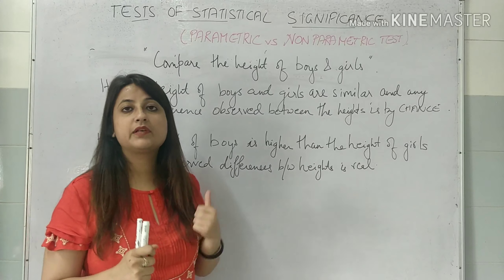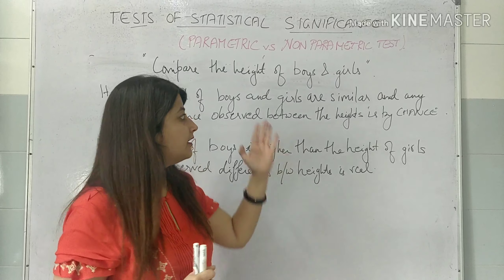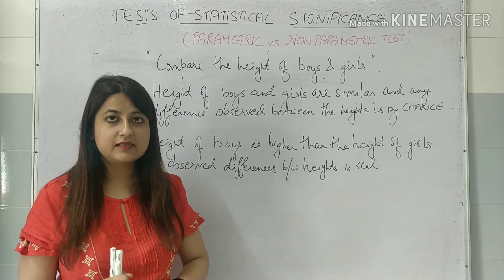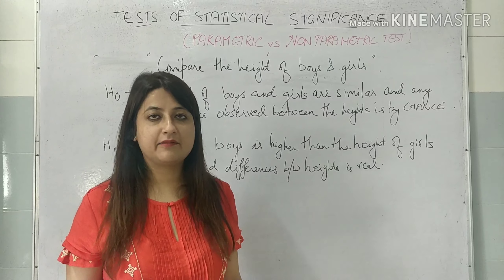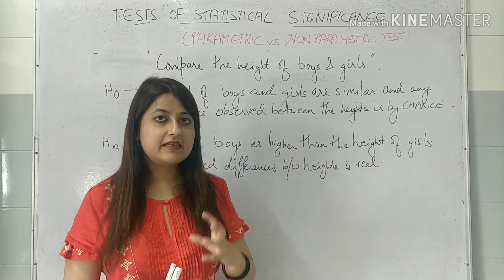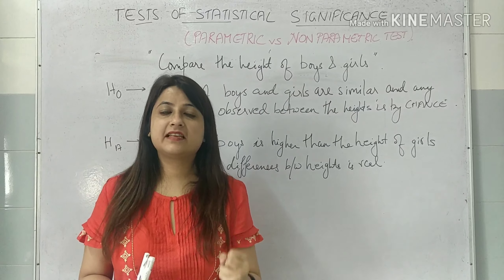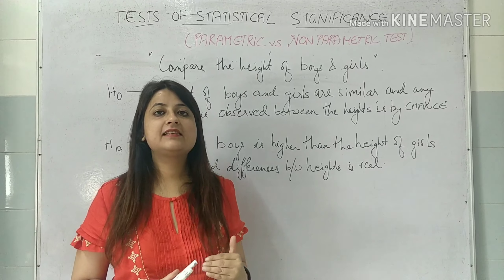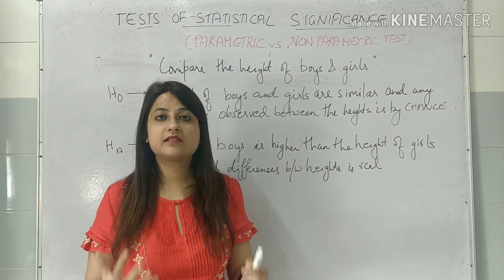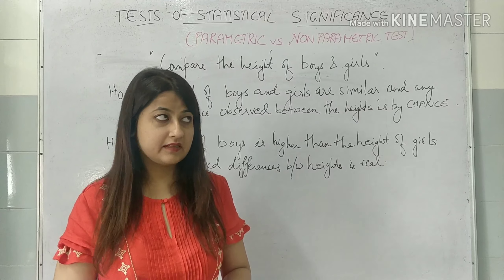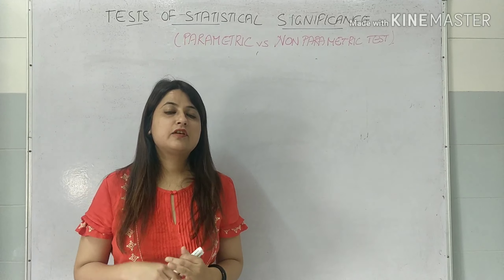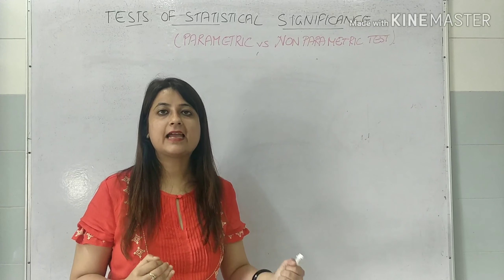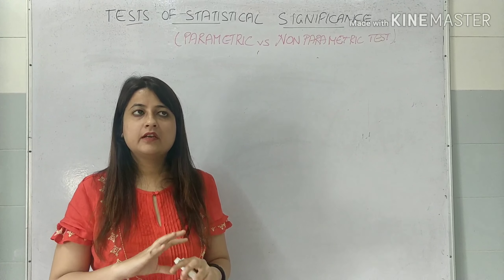So the observed difference between heights is real. Now my study is to compare the heights of boys and girls, and I have generated a null hypothesis. Now I need to verify my hypothesis. This is where the test of statistical significance comes into play. So what are tests of statistical significance? These are tests that help a researcher to confirm the hypothesis — to decide whether the hypothesis is true or not.